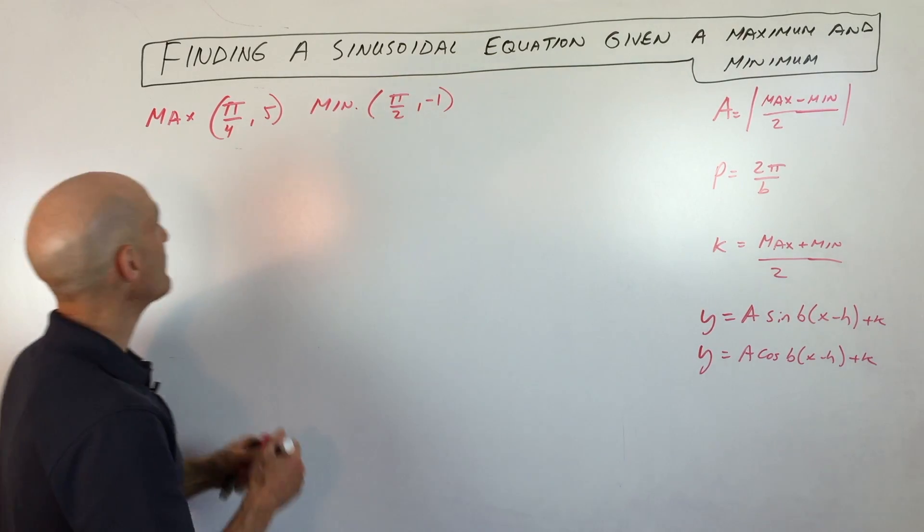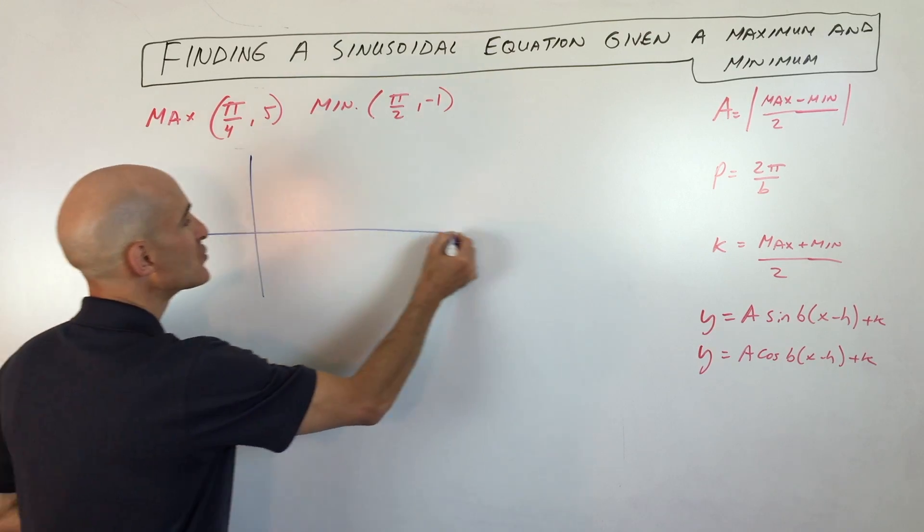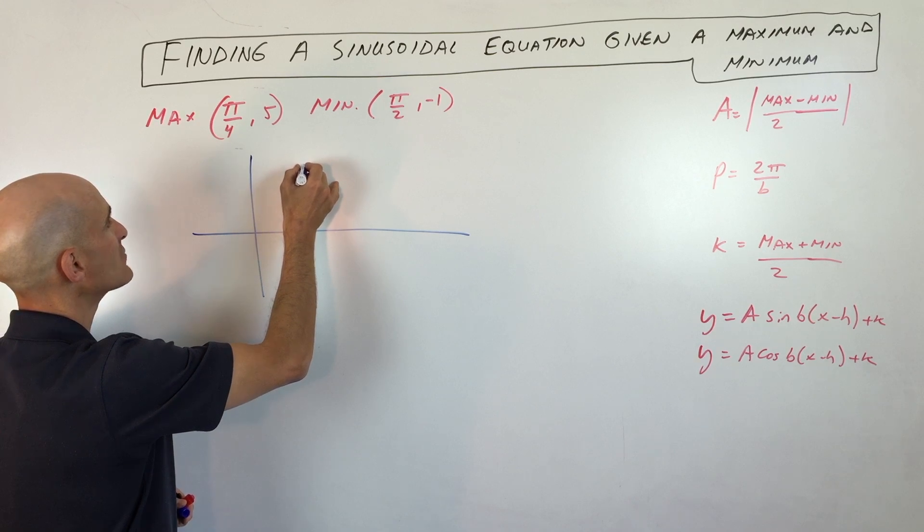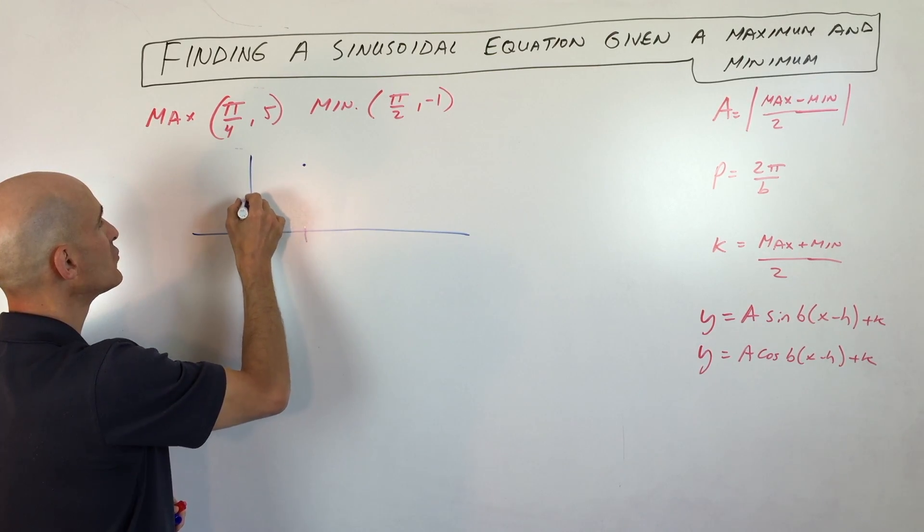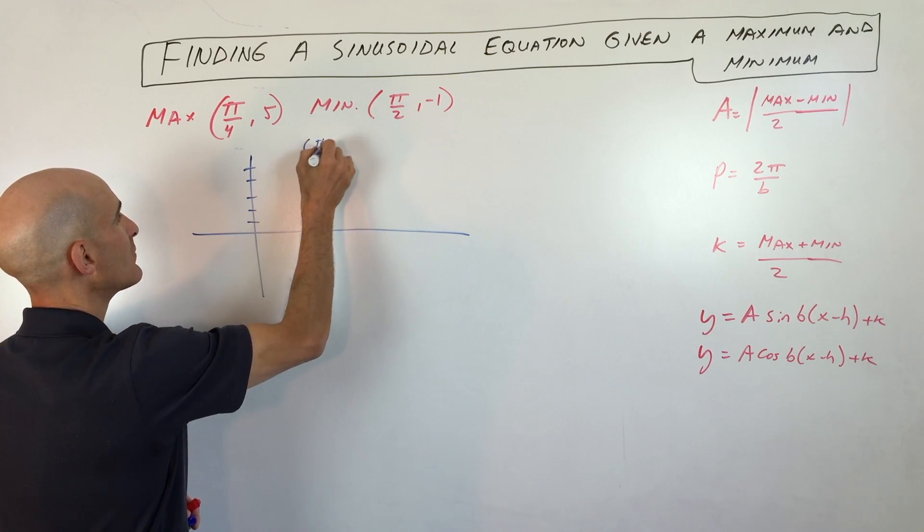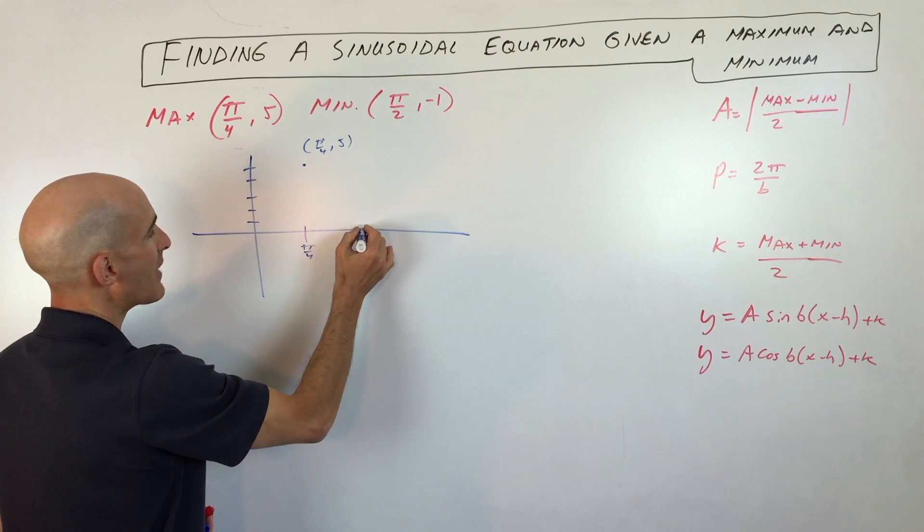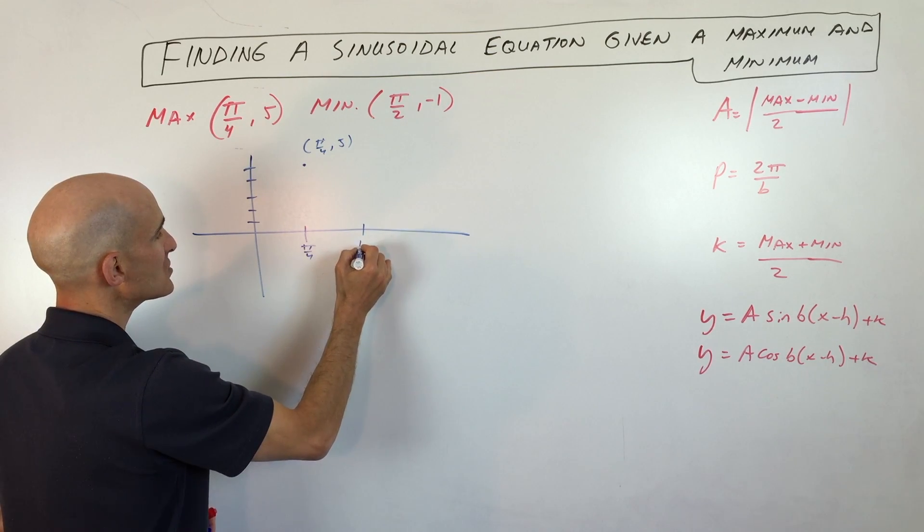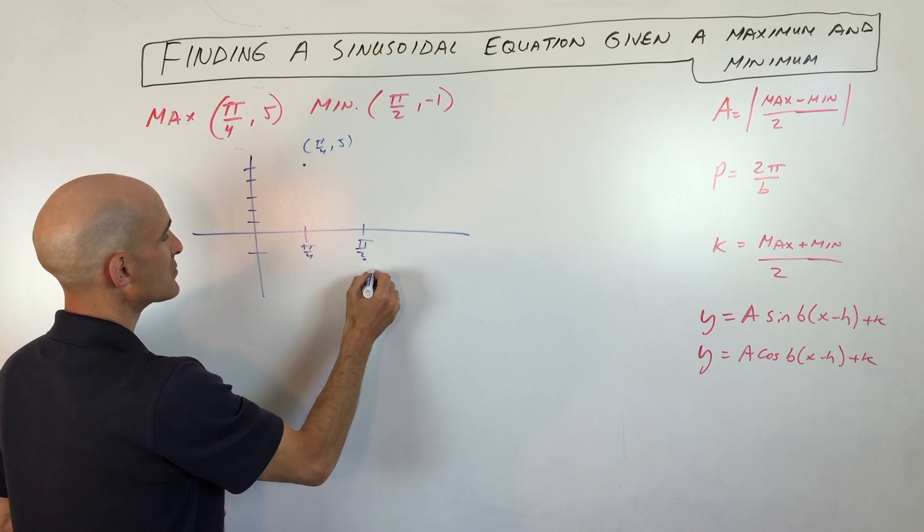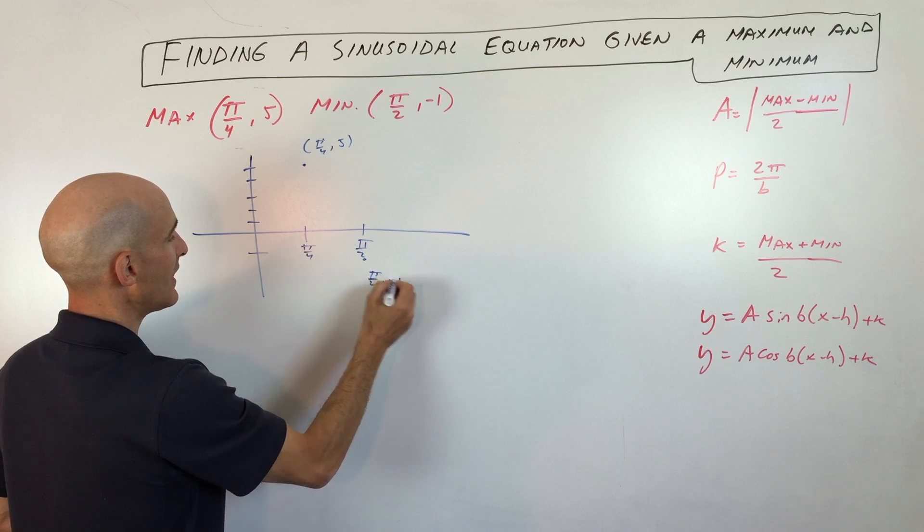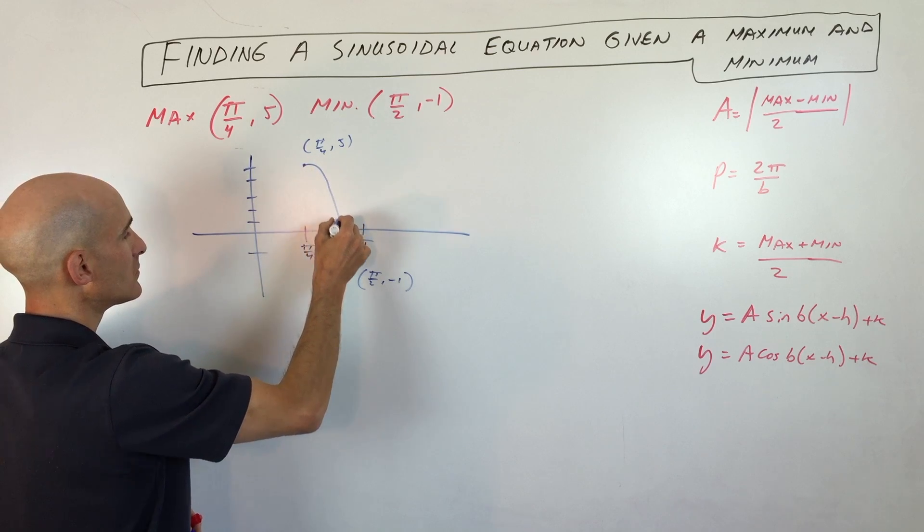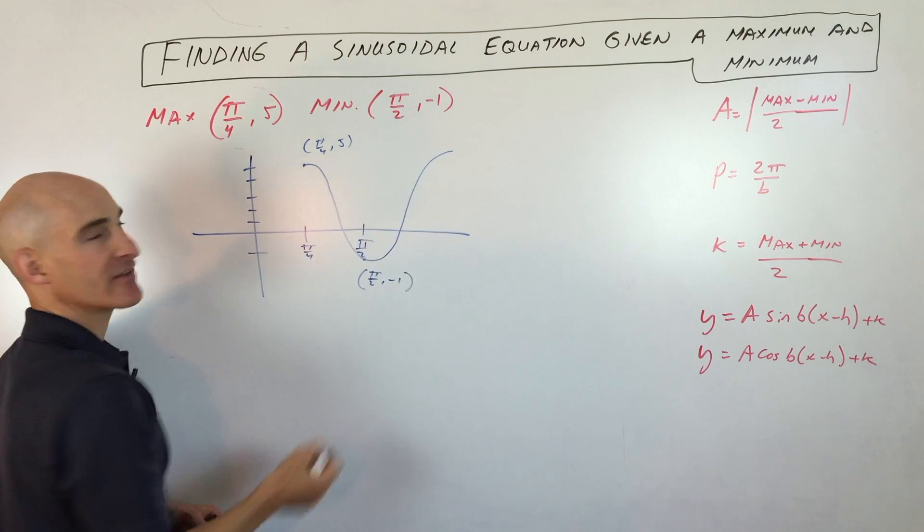Let's take a look at this example here so you can understand this a little bit better. First thing I like to do is draw a graph. So pi over 4, 5, that's going to be the maximum. So I'm just going to put that right here. So 1, 2, 3, 4, 5. So it's pi over 4. I'm just going to label that pi over 4, 5. And then the minimum over here is pi over 2, which is right here, pi over 2. And that's at negative 1. So that's going to be right basically there. So pi over 2 comma negative 1. And our graph is going to look something like this. It's going to go down like that and back like that.